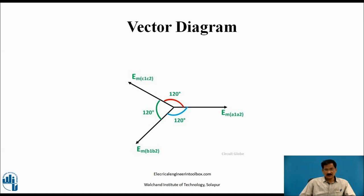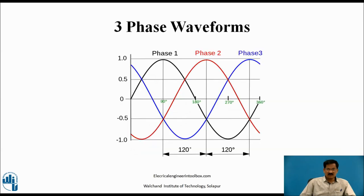This is the vector diagram. Here you will find EM vectors; the length of each vector represents the maximum value of that particular phase. This is the peak voltage produced due to the A1-A2 conductor, the maximum peak voltage EM produced due to B1-B2 conductor, and the third EM for C1-C2. These are the three-phase waveforms: phase 1 shown in black, phase 2 in red, and phase 3 in blue.